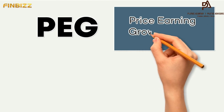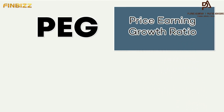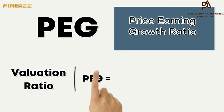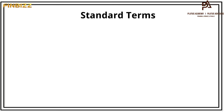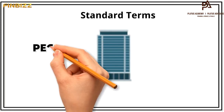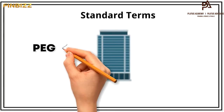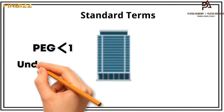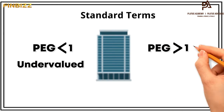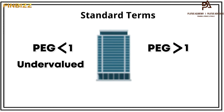PEG stands for Price Earning Growth ratio. PEG is a valuation ratio — it is a ratio of the PE of a stock and earnings growth. According to standard terms, a PEG ratio of a company should be less than one, meaning it is undervalued, and more than one meaning it is overvalued.